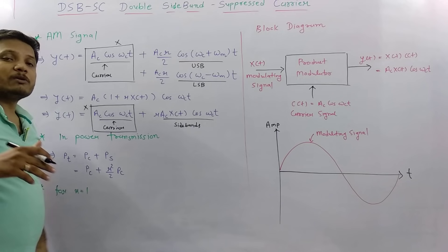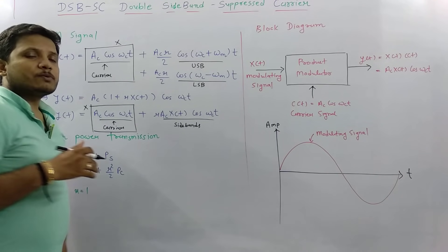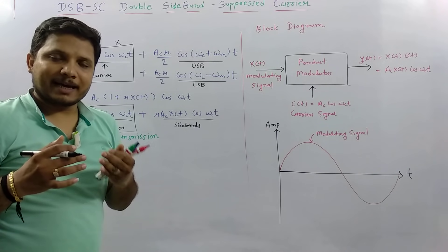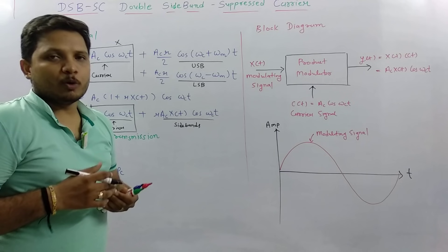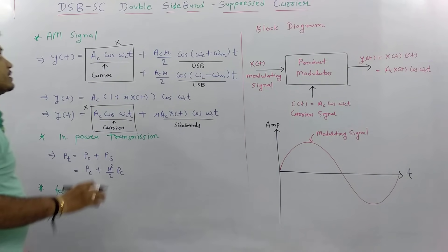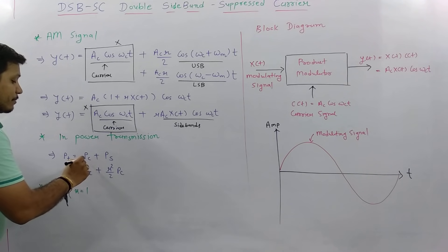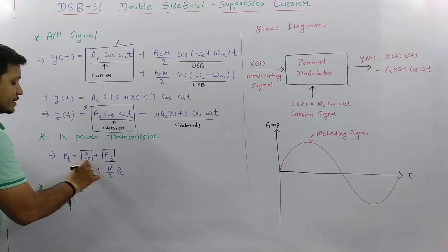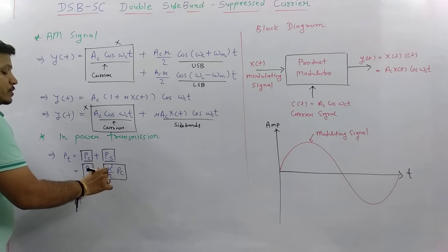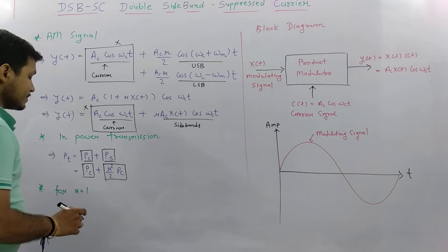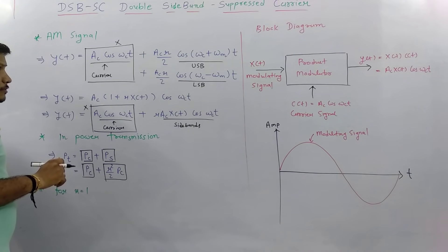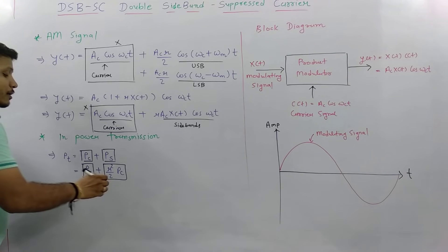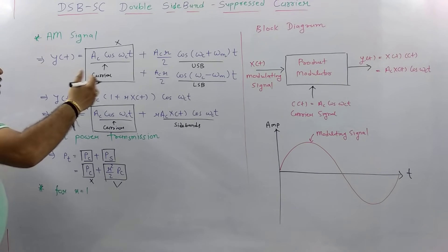DSBSC does not include the carrier signal that we send in a standard AM signal. DSBSC means double sideband suppressed carrier — we don't send the carrier signal; we only send the upper sideband and lower sideband. In power transmission of AM there are two power components: carrier power PC and sideband power (μ²/2)·PC, where μ is the modulation index. When we send DSBSC, we do not send the carrier component.